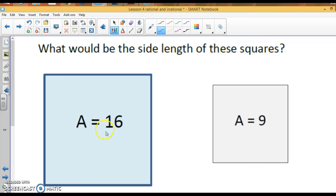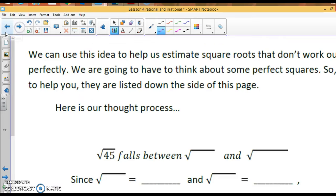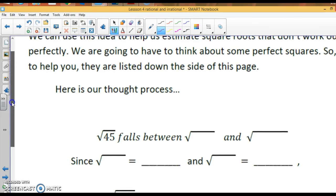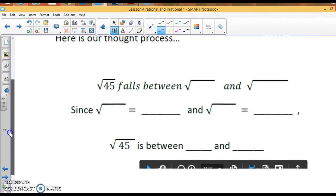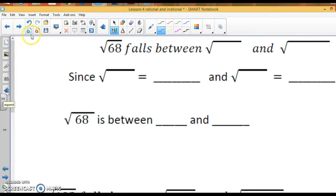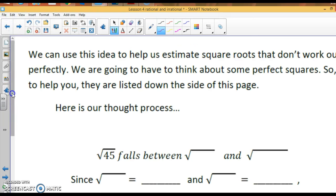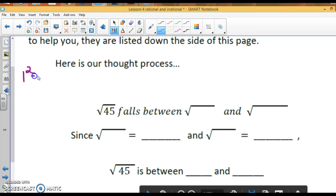All right, what would the length of this side be? Well, what times itself gives you 16? It would be 4. What times itself gives you 9? It would be 3. That's called taking the square root. All right. You can use this idea to help us estimate square roots that don't work out perfectly. We are going to have to think about some perfect squares. To help you do that, they are listed on the sides of this page. When you look in your note packet, the squares are listed down the sides. Now, I am going to write that here.